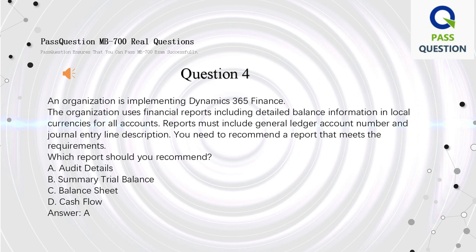Question 4: An organization is implementing Dynamics 365 Finance. The organization uses financial reports including detailed balance information in local currencies for all accounts. Reports must include general ledger account number and journal entry line description. You need to recommend a report that meets the requirements. Which report should you recommend? A: Audit details. B: Summary trial balance. C: Balance sheet. D: Cash flow. Answer: A.